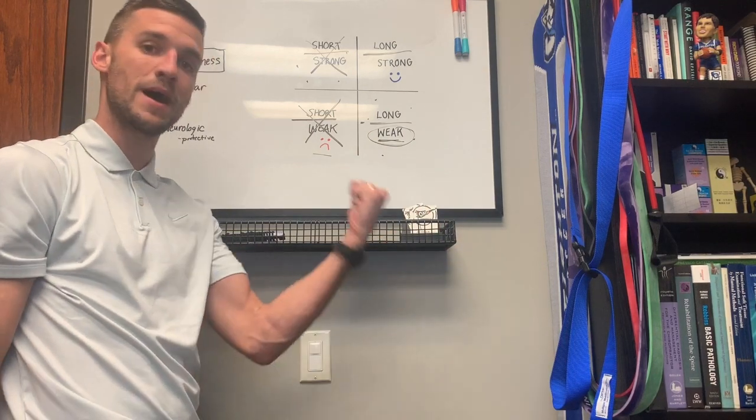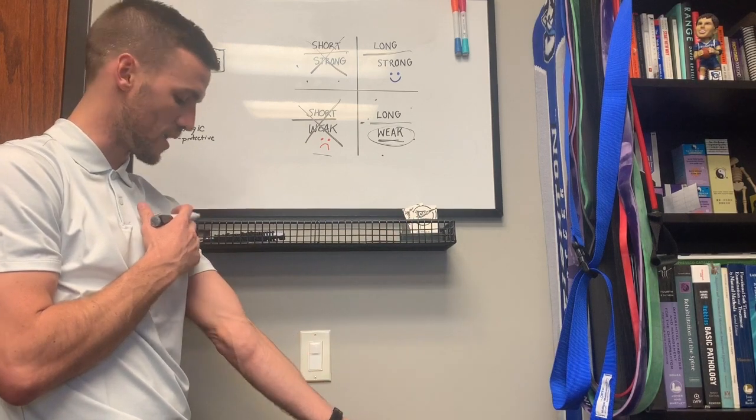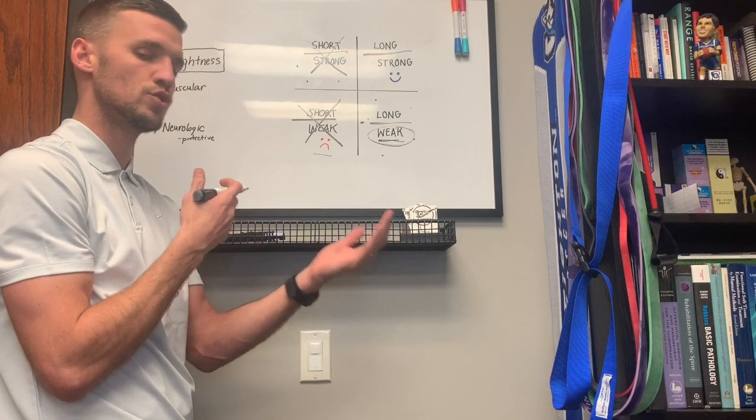So if you think about you're doing a bicep curl, this is the concentric action, but if you slowly let that weight down, now my bicep is lengthening under contraction which is super super healthy.